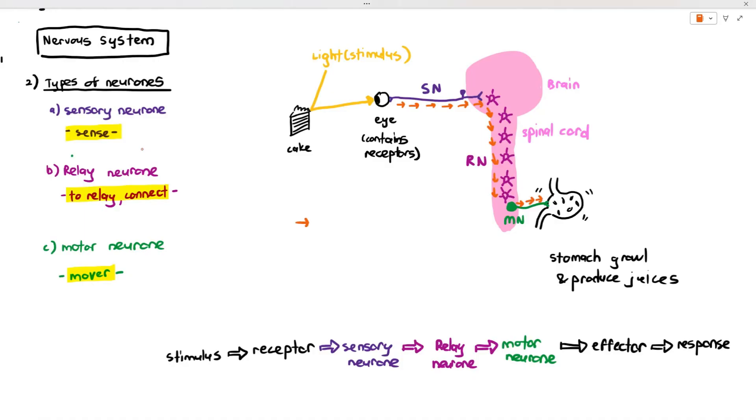The arrows in orange are just the transmission of the nerve impulse or the electrical impulse. They start from the receptor, move along the sensory neuron towards the relay neuron, towards the motor neuron, and it hits the effector in the end.